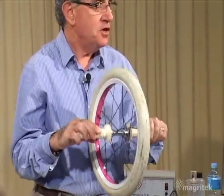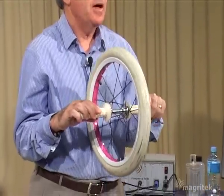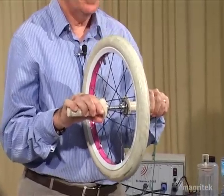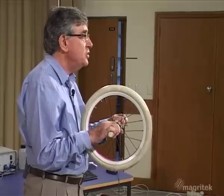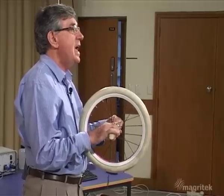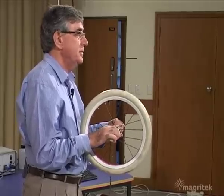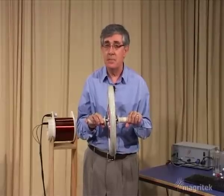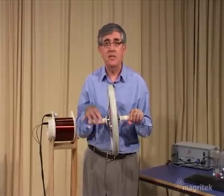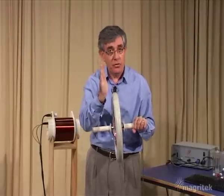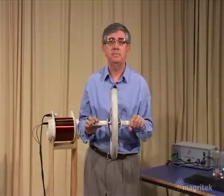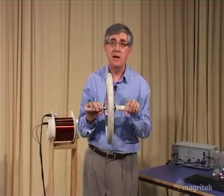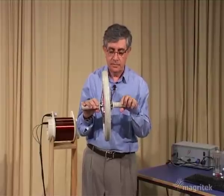The first principle of understanding atomic nuclei in a magnetic field is to realise that those nuclei have magnetism. And so like little compass needles, when they're placed in a magnetic field they tend to line up with the field. I can demonstrate that idea with this wheel.